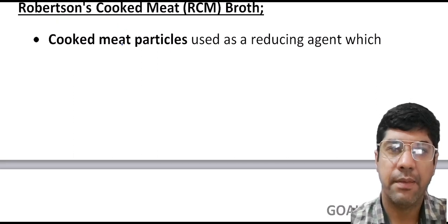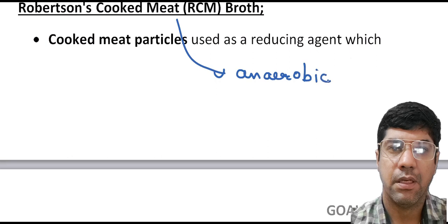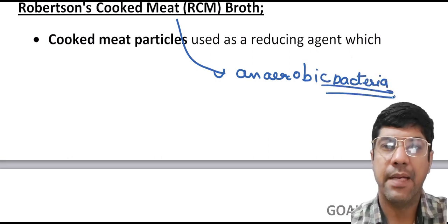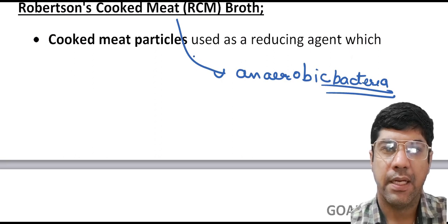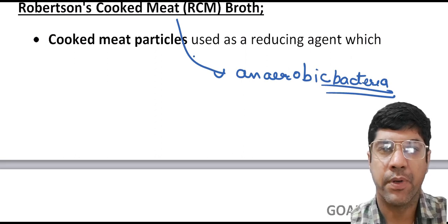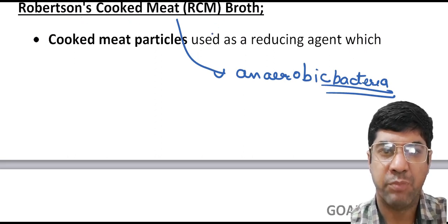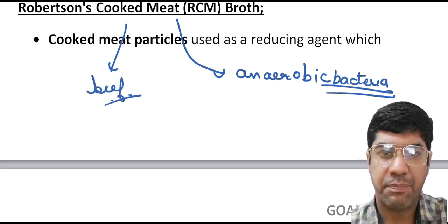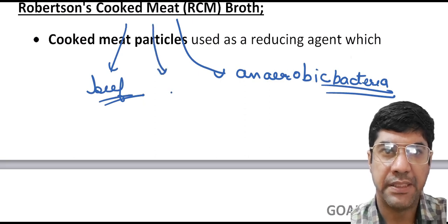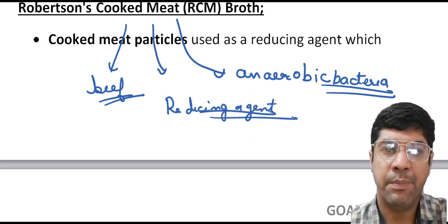The Robertson cooked meat medium is widely used for the culture of anaerobic bacteria. The medium consists of fat-free minced cooked meat in a broth used to culture strict anaerobes, and it can indicate saccharolytic or proteolytic activity by a change in the color of the meat. The cooked meat broth contains small particles of cooked meat, typically beef. These meat particles serve as a reducing agent, absorbing oxygen from the environment, which is important because many anaerobic bacteria cannot grow in the presence of oxygen.